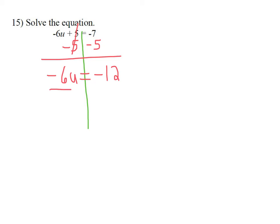So I need to divide both sides by negative 6. On the left side now, I'm left with u. On the right side, I have to do the arithmetic. Negative 12 divided by negative 6. Negative divided by negative is positive. And 12 divided by 6 is 2.